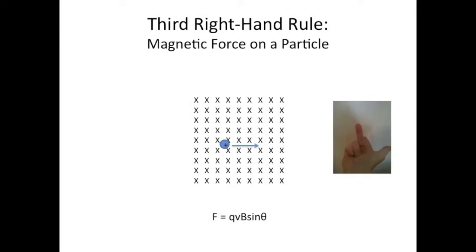As always, index finger points into the page because that's the direction of the magnetic field. Thumb to the right because that's the direction of the particle's velocity, which gives us the middle finger pointing up in the direction of the force. And no, I'm not trying to weirdly flip you off in this picture.